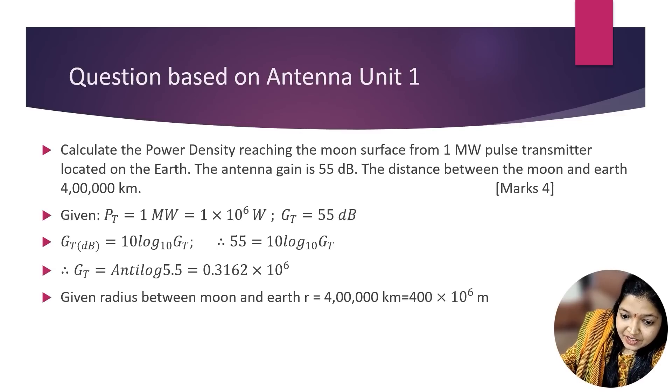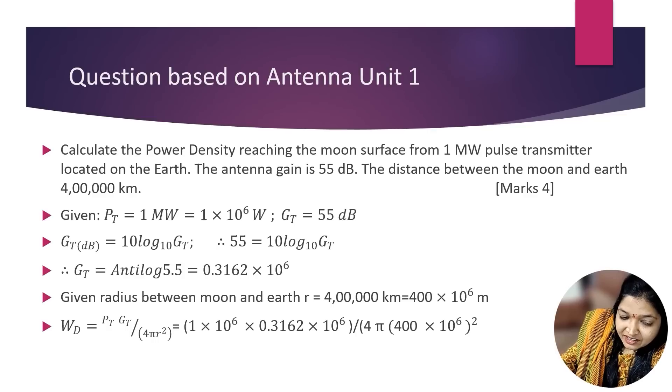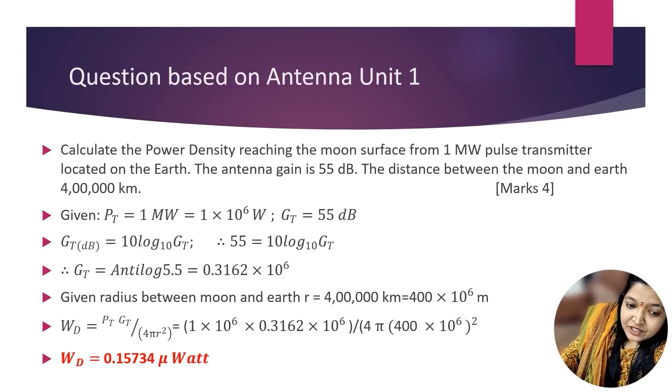The radius is given; we have to convert kilometers into meters because we are using standard units. The power density formula is Wp = (Pt × Gt)/(4πR²). Putting the values of Pt = 1 × 10^6 W, Gt = 0.3162 × 10^6, and R = 400 × 10^6 m, we get the answer Wp = 0.15734 μW.